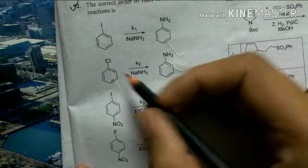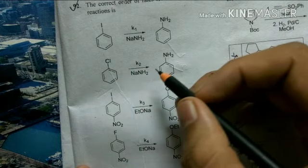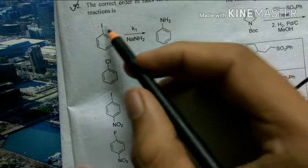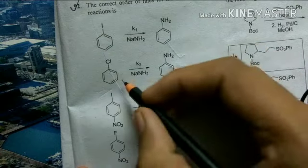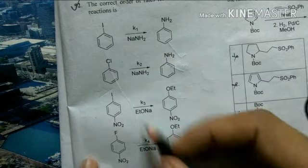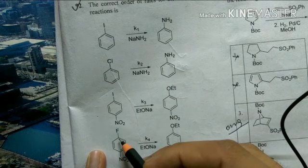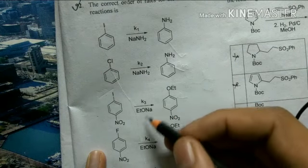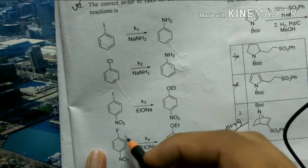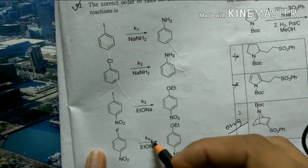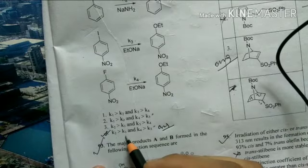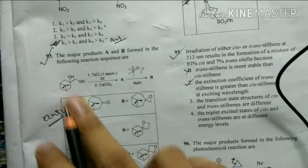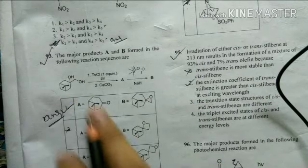The first aromatic substitution reaction proceeds via the benzyne mechanism, where the rate-determining step is deprotonation. This is favored by more electronegative groups — between iodine and chlorine, chlorine is more electronegative, so k2 is faster than k1. In the second reaction, greater electron-withdrawing ability increases nucleophilic attack rate — fluorine is most electronegative, so k4 is faster than k3. Therefore, option 4 is the correct answer.